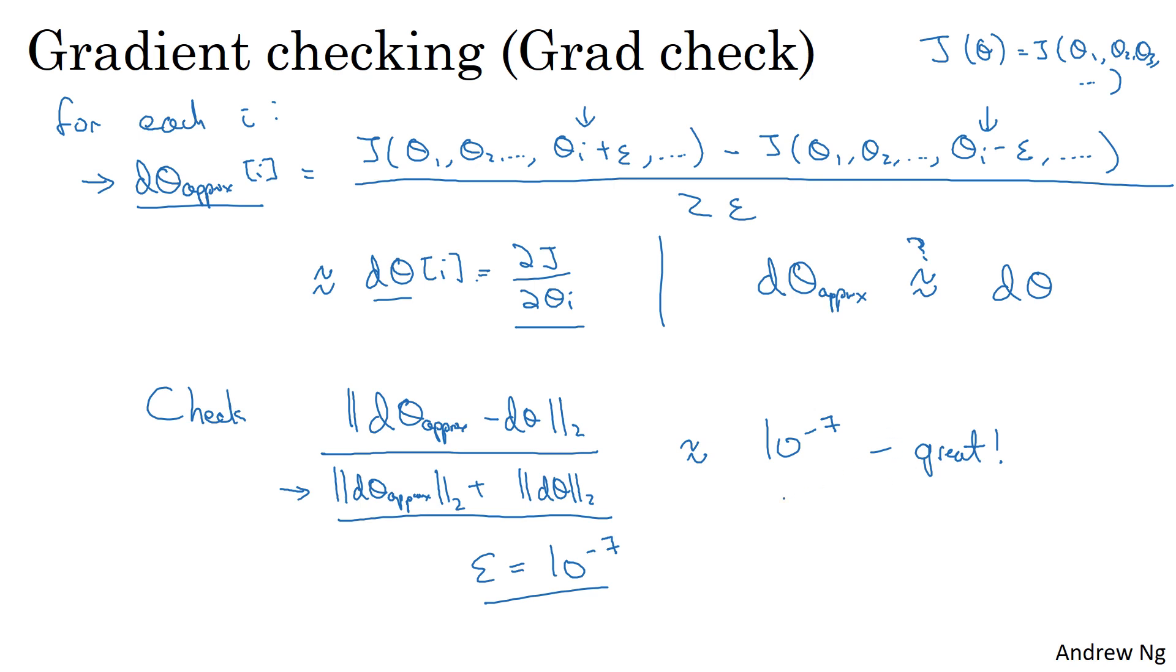This is just a very small value. If it's maybe on the range of 10 to the minus 5, I would take a careful look. Maybe this is okay, but I might double check the components of this vector and make sure that none of the components are too large. And if some of the components of this difference are very large, then maybe you have a bug somewhere.